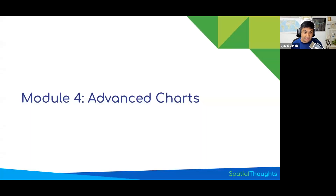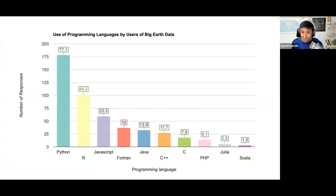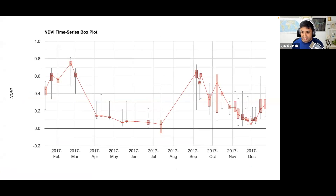Then we'll do the advanced charts in the last section. You can create charts with annotations and bar charts where each bar has a different color — something not possible with built-in functions, but useful for papers or survey results. Box plots are a very important thing for researchers. You'll be asked to produce these kinds of charts whenever you do analysis where you want to show the variance of each value. Instead of plotting just one value, you show the variation — these are called whisker plots or box plots — and we'll see how to create them in Earth Engine.